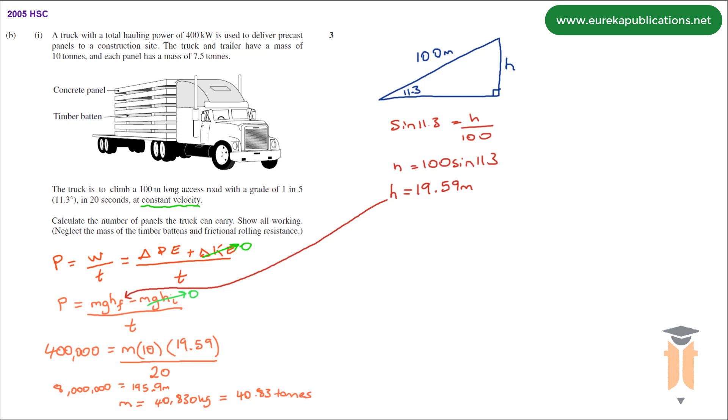This mass value is the total mass so that includes the truck, the trailer and the panels. To find the mass of the panels we now subtract the 10 tons which is the truck and trailer from the total mass.